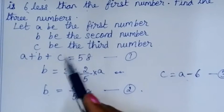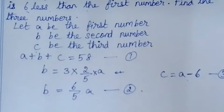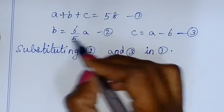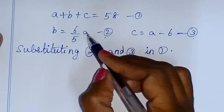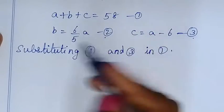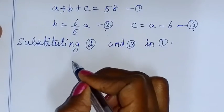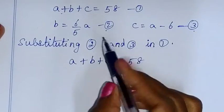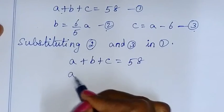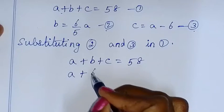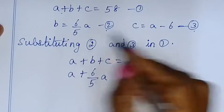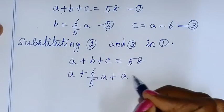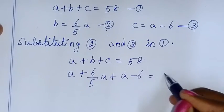We will substitute the values from equations 2 and 3 into the first equation. Our first equation is A plus B plus C equals 58. So substituting: A plus 6 by 5 A plus A minus 6 equals 58.